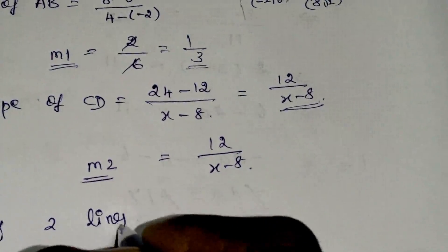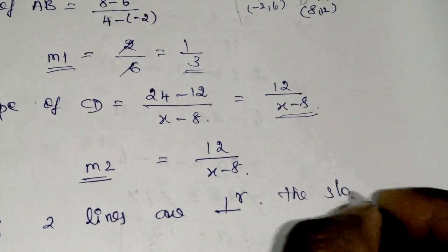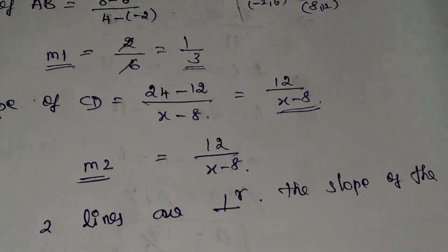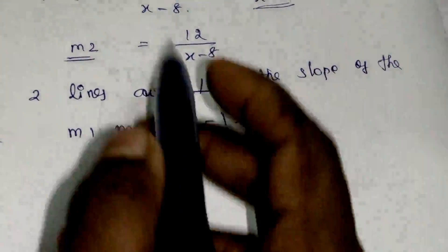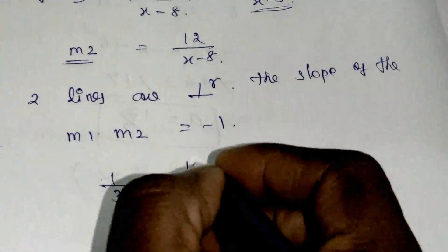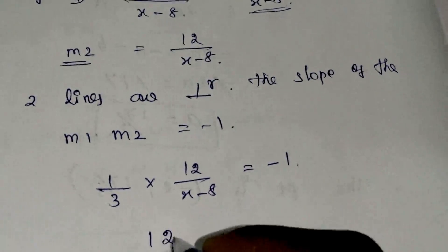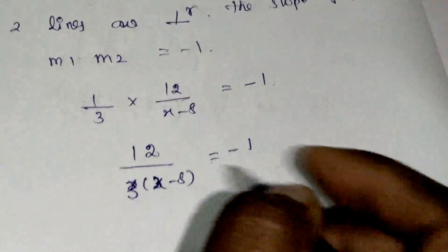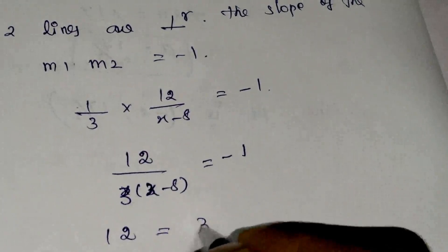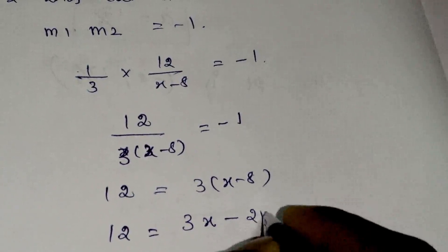Since we know the two lines are perpendicular, m1 into m2 should equal minus 1. So 1 by 3 multiplied by 12 by x minus 8 equals minus 1. By cross multiplication: 12 is equal to minus 1 into 3 into x minus 8.